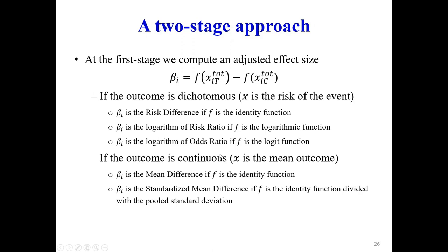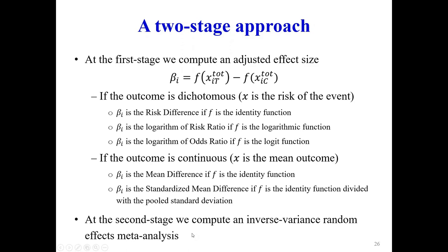Similarly, if the outcome is continuous and X is the mean outcome, by making different choices on F we can estimate the mean difference or the standardized mean difference. Once we do that for any trial and compute the effect sizes and variances, at the second stage we compute an inverse variance random effects meta-analysis.